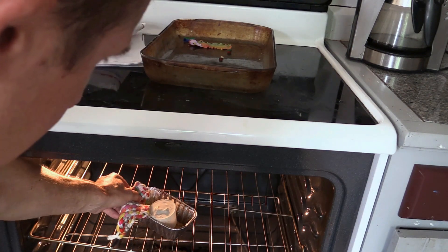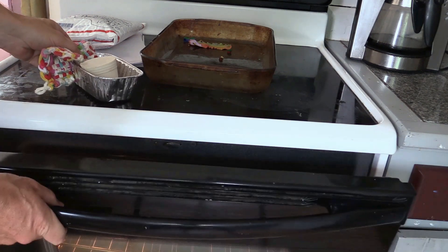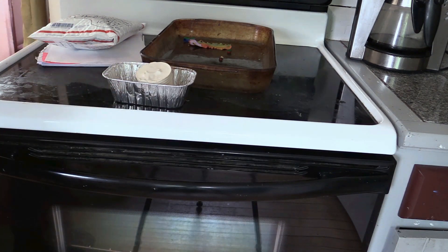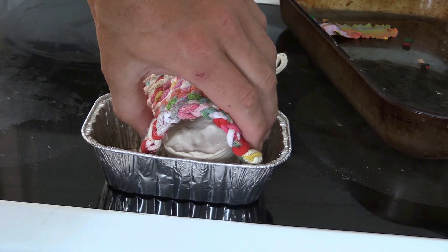After the wax is removed continue to warm the plaster to remove more water from the plaster. You also want the mold warm when you pour in the metal so that there is less temperature difference between the plaster mold and the metal.